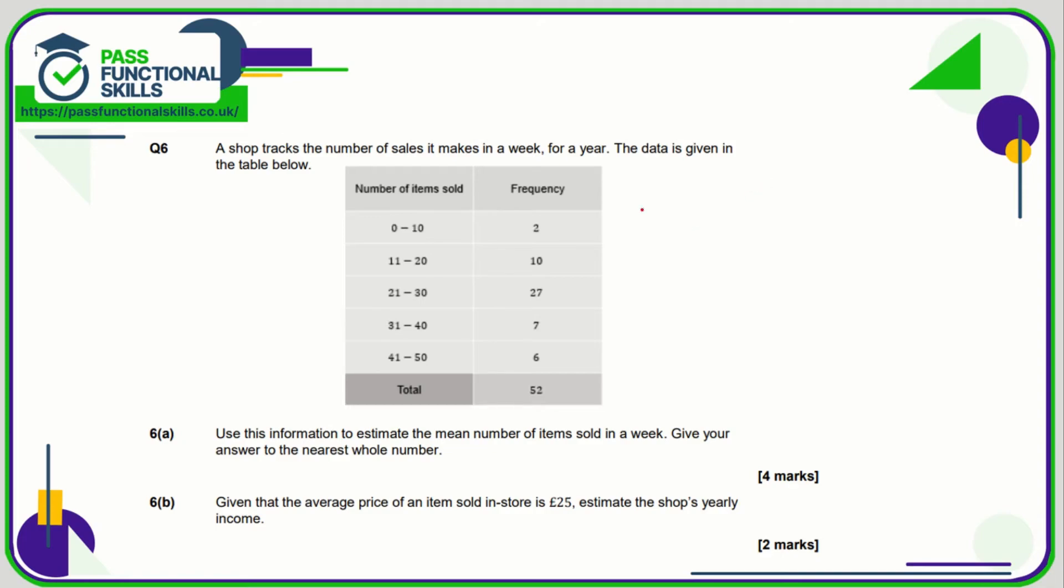And question six. Again, we are going to be doing our midpoint column and then midpoint times frequency column. The midpoint 0 to 10 is 5, 15.5, 25.5, 35.5, and 45.5. Midpoint times frequency: 2 times 5 is 10.